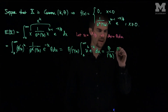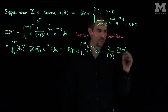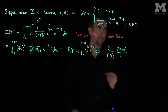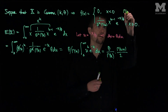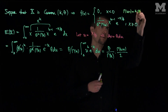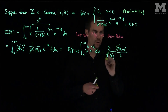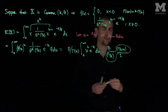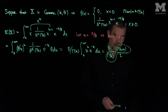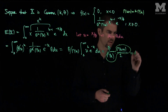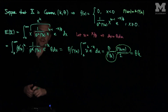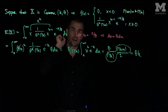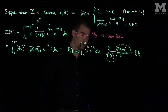This integral is gamma(k+1). We saw previously that gamma(k+1) equals k times gamma(k), so this ratio is exactly equal to k. Therefore the mean is theta times k. The mean of a gamma distribution is the product of the two parameters, theta and k.